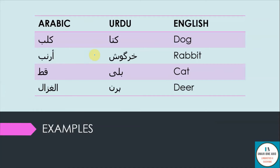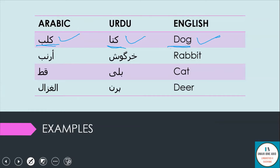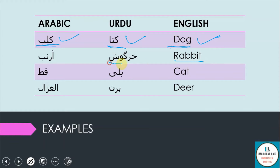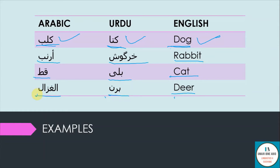For example, in English we say 'dog', in Urdu we say 'kutta', in Arabic we say 'kalb'. So the same hairy object with four legs is described with different linguistic forms. Similarly, 'rabbit' in Urdu is 'khargosh', in Arabic it is 'arnab'. 'Cat' in English, 'billy' in Urdu, and 'ot' in Arabic. 'Deer' in English, 'hiran' in Urdu, and 'al-gazar' in Arabic. The same object is described by different words in different languages — this connection is called arbitrariness.